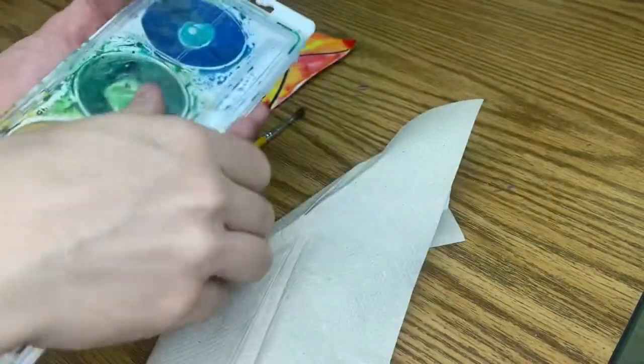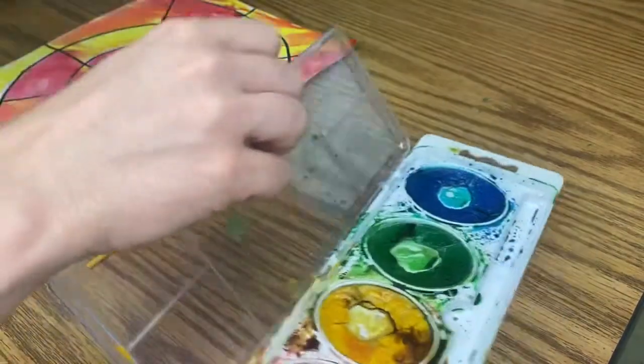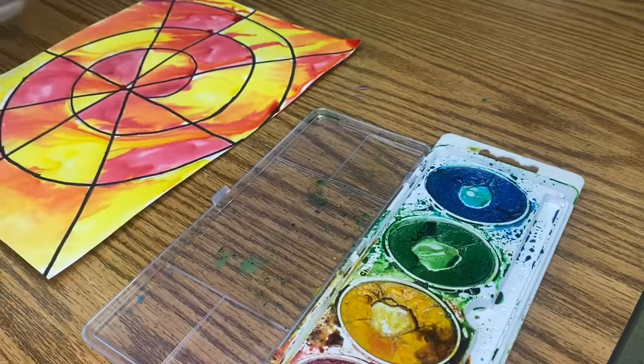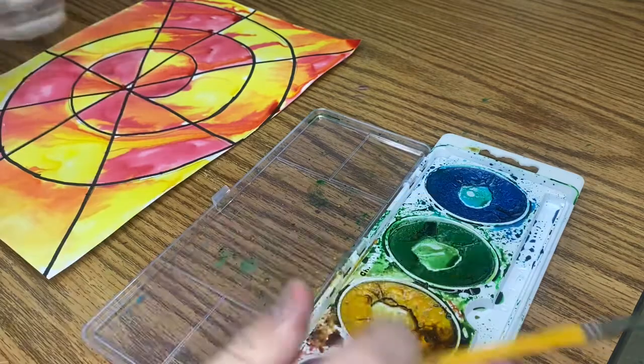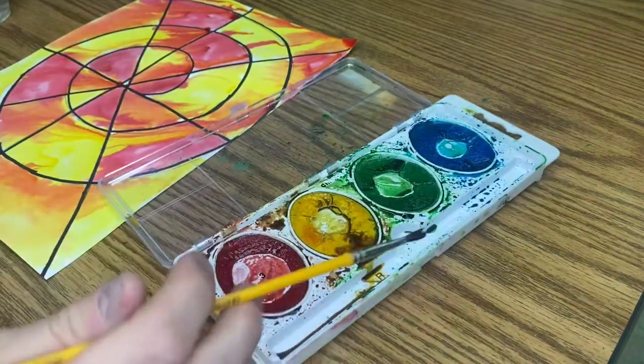When you're ready, you'll open the watercolor tray, get your paper towel ready, and then dip. Let it drip, and then go for it. Go for whatever color you want to try.